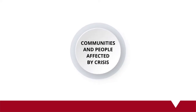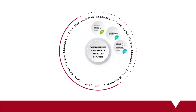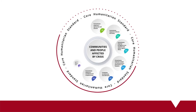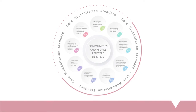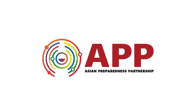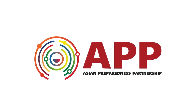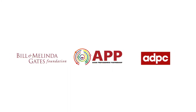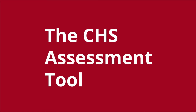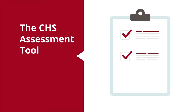The core humanitarian standard on quality and accountability, or CHS, is nine commitments on humanitarian response. Together, they ensure a solid approach to effective and accountable humanitarian action. The Asian Preparedness Partnership developed the CHS assessment tool for all stakeholders to take ownership of their commitment to the CHS, with support from the Bill and Melinda Gates Foundation. The tool was also designed to be adaptable, tailored to the local context and language to ensure greater application of humanitarian interventions and CHS compliance.